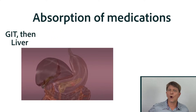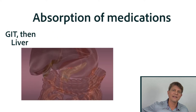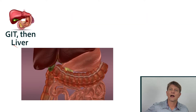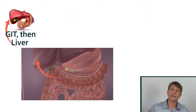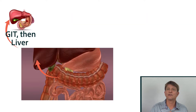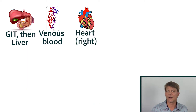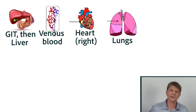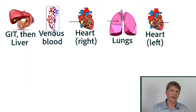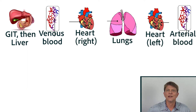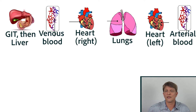It's going to wind up going into the liver, into the venous system, into the right side of the heart, into the lungs, into the left side of the heart, and then finally onto systemic arterial circulation, where it's going to be able to do its actions.